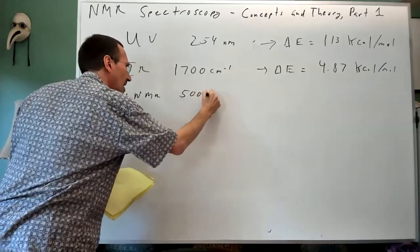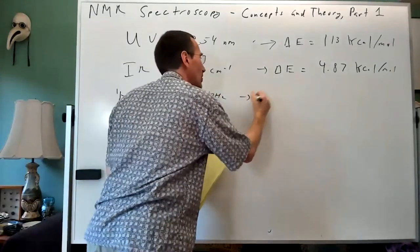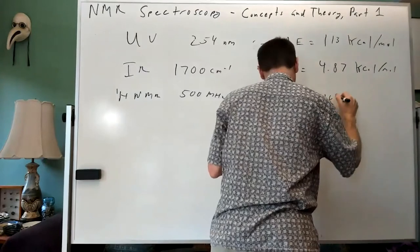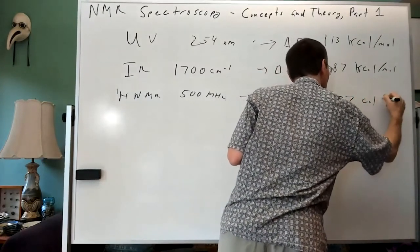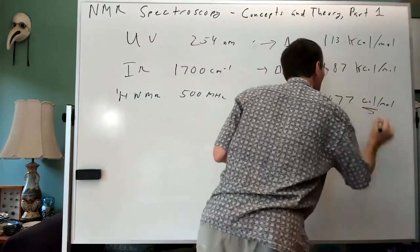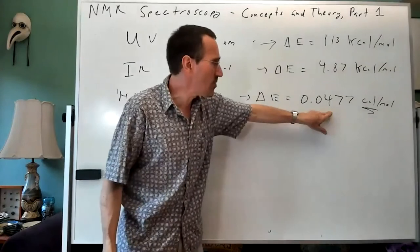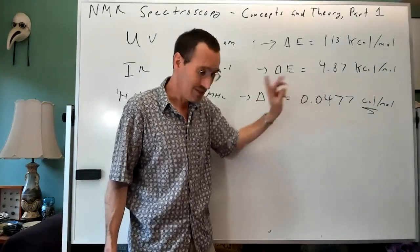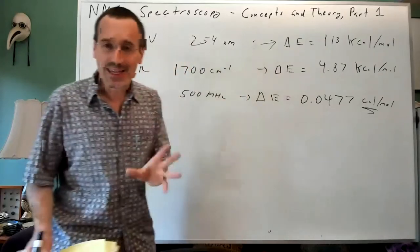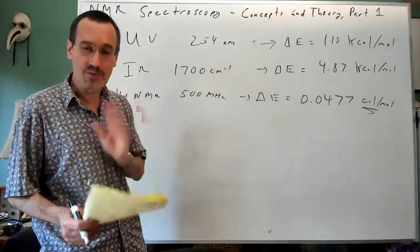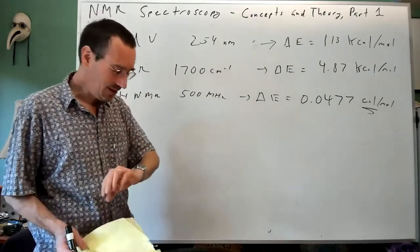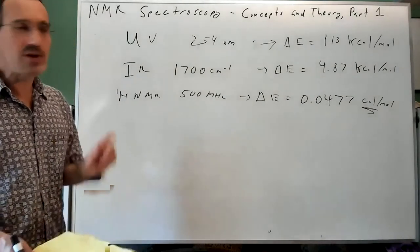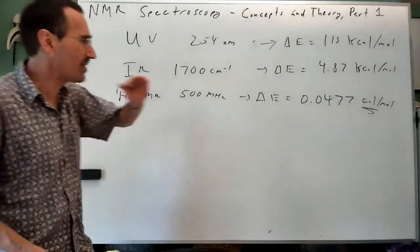For NMR, if we have a 500 megahertz NMR, that's leading to a delta E of 0.0477, not kilocalories per mole, but small calories per mole. Three orders of magnitude less than a kilocalorie per mole. Very small difference in energy.